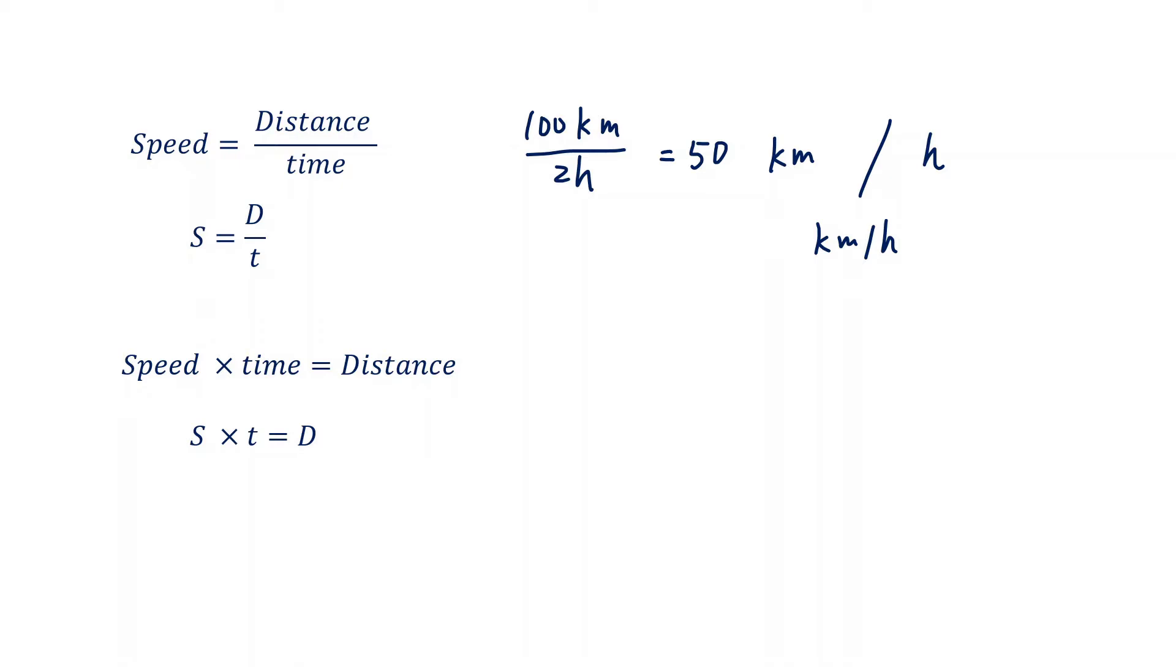So S equals D divided by T. Alternatively, speed times time equals distance. So 50 kilometers per hour times two hours, the distance will be 100 kilometers. S times T equals D. The idea is easy. Now let's see some real questions.